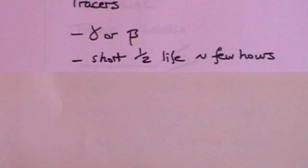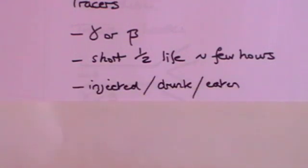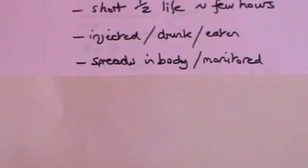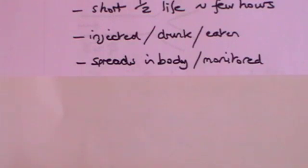Radiation can also be used as tracers. For this you need to use gamma or beta radiation — we'll explain why in a moment — and you need a short half-life of a few hours. Half-life is basically the length of time before half of the material has decayed. So if you don't want radioactive material hanging around for a long time, you need a very short half-life. The material is injected into you, or you may even drink or eat it, depending on what part of the body the doctor wants to examine. The injected radioactive material will spread through your body and be monitored outside. The reason you must use gamma or beta radiation is that alpha radiation has very small penetration — it can be stopped by a piece of paper — so if there were an alpha source inside you, the alpha rays would never get out and you wouldn't be able to detect them.